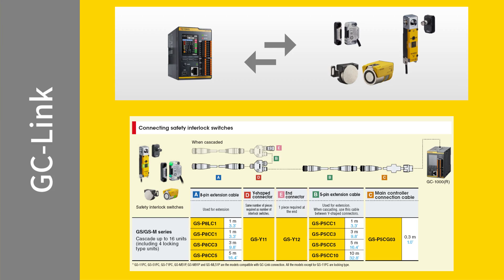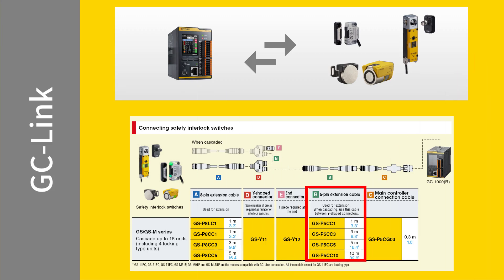We'll use three types of cables in the setup. The first is GSP5CG03, which connects to the GCLink port on top of the GC controller and terminates in M12 5-pin connectors. The second is M12 5-pin extension cables, which connect one Y connector to another or connect the first Y connector to the GSP5CG03. The third is M12 8-pin cables that connect each Y connector to its respective interlock.